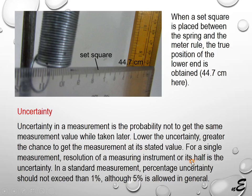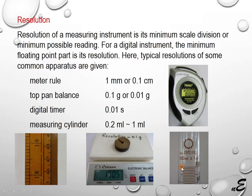So uncertainty is equal to the resolution, which is equal to the smallest scale reading. In a standard measurement, percentage uncertainty should not exceed 1 percent, although 5 percent is allowed in general. Resolution of a measuring instrument is its minimum scale division or minimum possible reading.